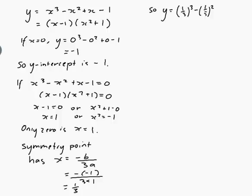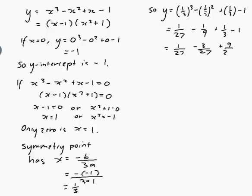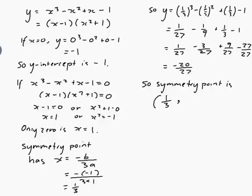So a third cubed minus a third squared plus a third minus 1, which is 1 over 27 minus 1 over 9 plus 1 over 3 minus 1. If I put everything over 27, I reckon I could do it. So 9 times 3 would be 27, so that would be 9 over 27 and that would be 27 over 27. And so I get 1 minus 3 would be minus 2, minus 2 plus 9 would be 7, 7 minus 27 would be minus 20. So symmetry point is a third, minus 20 over 27.